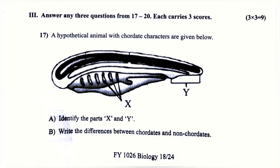17. A hypothetical animal with chordate characters are given below. A: Identify the parts X and Y. B: Write the difference between chordates and non-chordates.